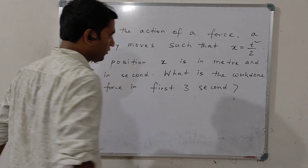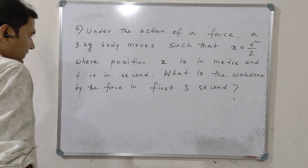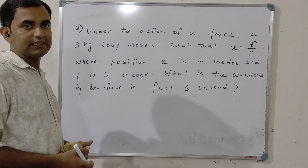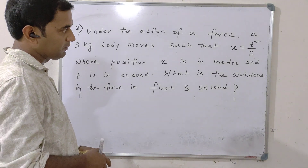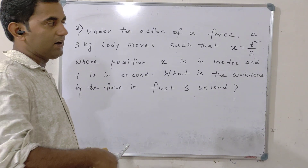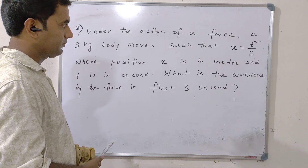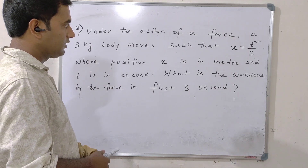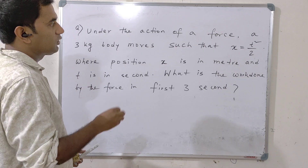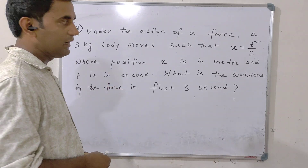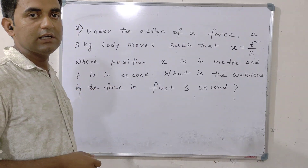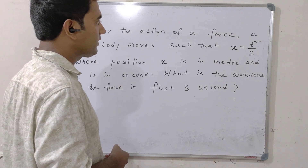So, what should be the approach? The approach is that we know work done is equal to change in kinetic energy. That means we have to find out the initial kinetic energy and the final kinetic energy. To find the kinetic energy, the first step should be to find out the velocity using the given equation x equal to t squared by 2.